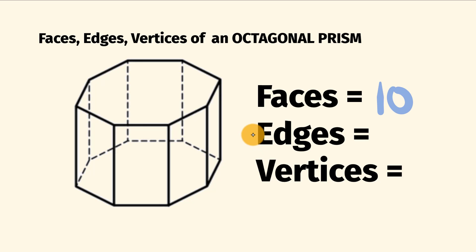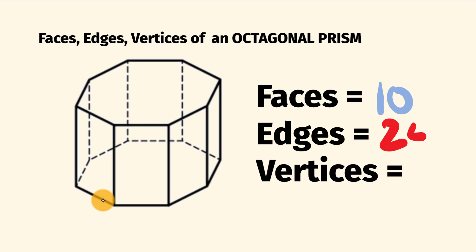So now to the number of edges. These are where the shape's faces meet. An octagonal prism has 24 of these edges. Let me show them to you.